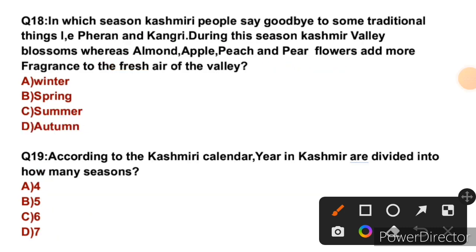Question 18: In which season do Kashmiri people say goodbye to traditional items Faran and Kangri? During this season, Kashmir is blue and white with the bloom of apple, peach, and pear flowers, adding fragrance to the valley. Faran and Kangri are used in winter for warmth. When spring comes, people put them away. So the right answer is B — spring.